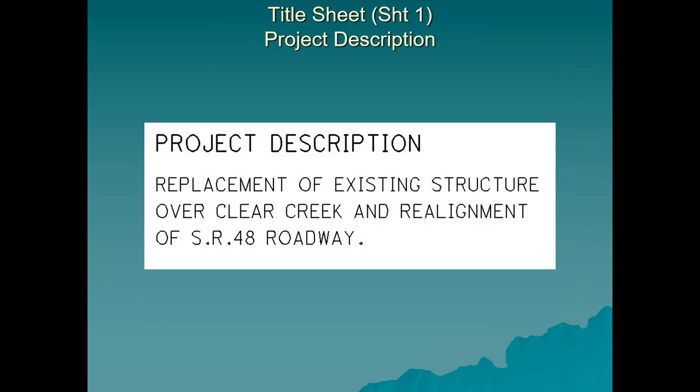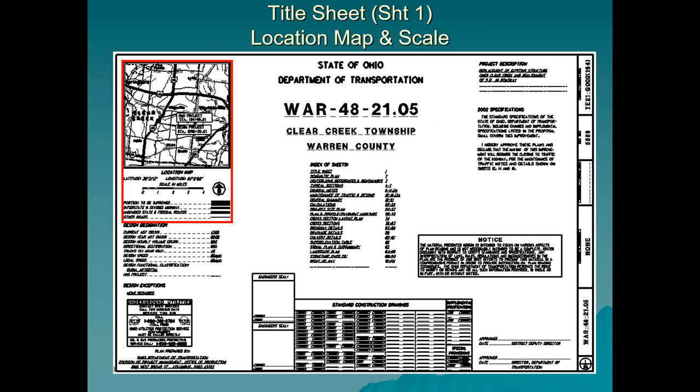In the top right-hand corner is what we call the project description — a brief description of the project. For this one, Warren County Route 48, it's a replacement of an existing structure. In construction plans, a structure refers to a bridge — not a building as in real estate terms. In this case, we're talking about a bridge over Clear Creek and the realignment of State Route 48, so we're replacing a bridge and realigning the road.